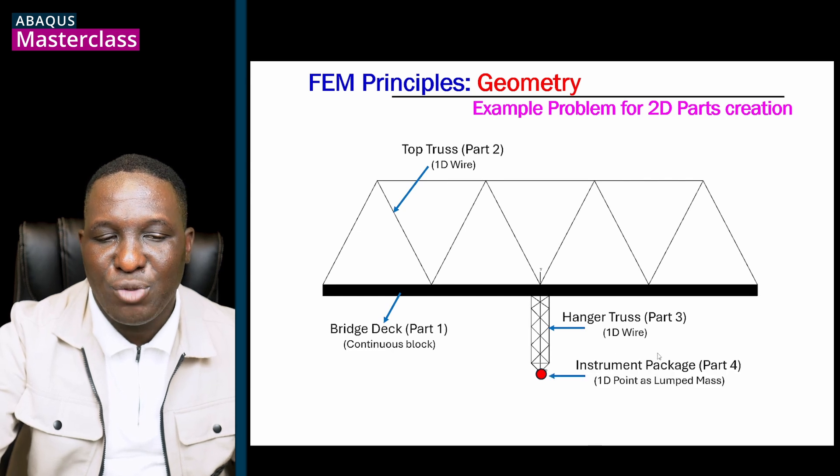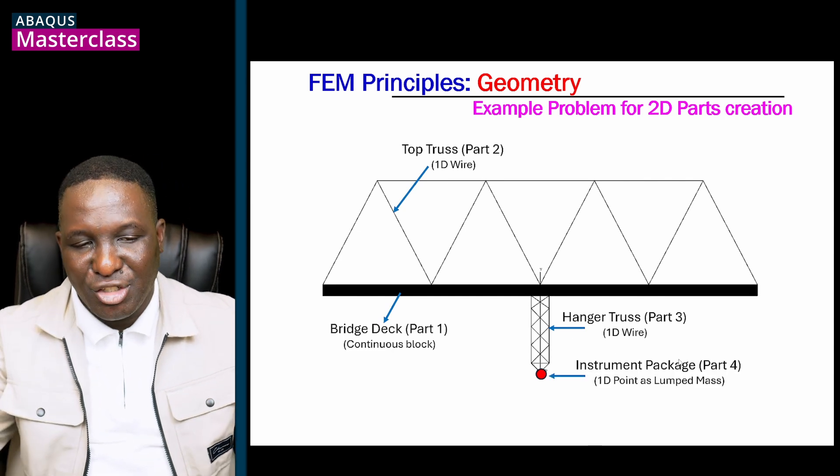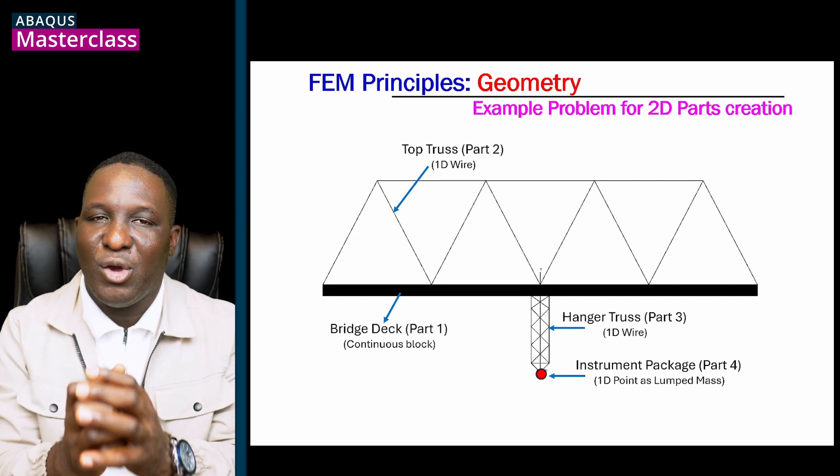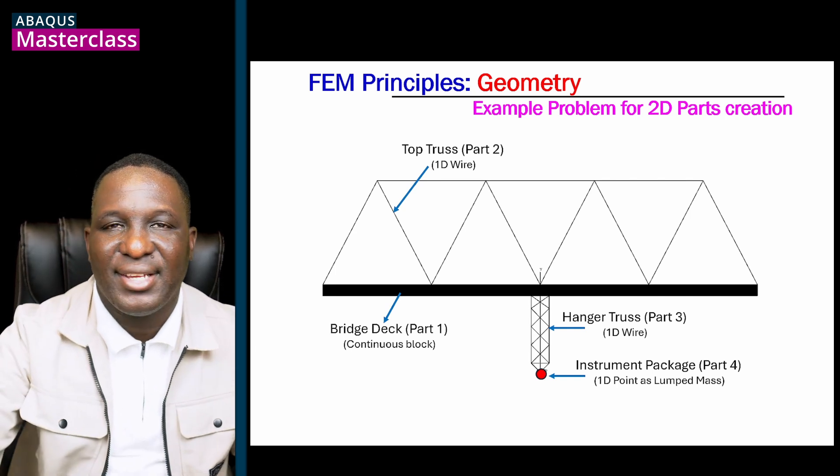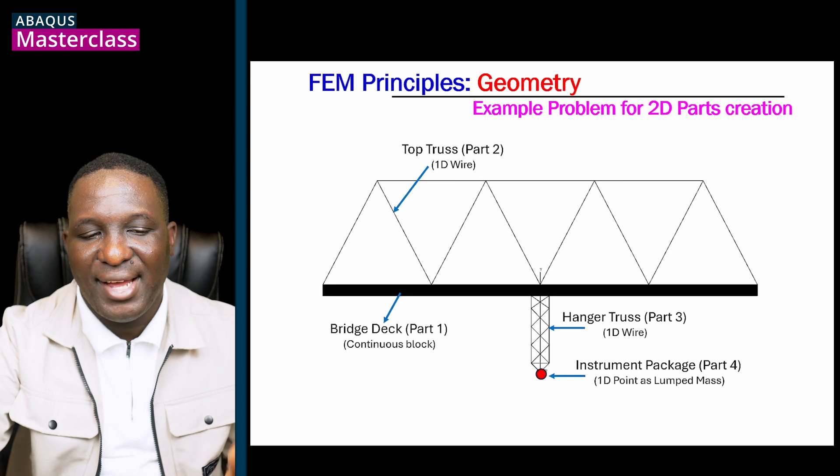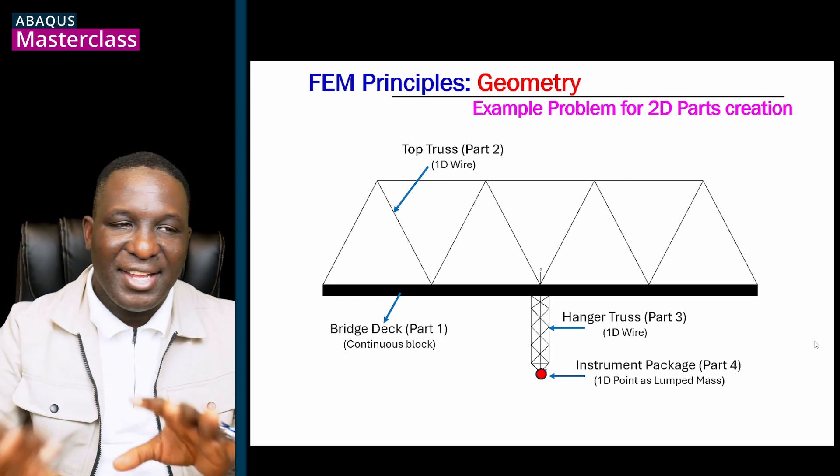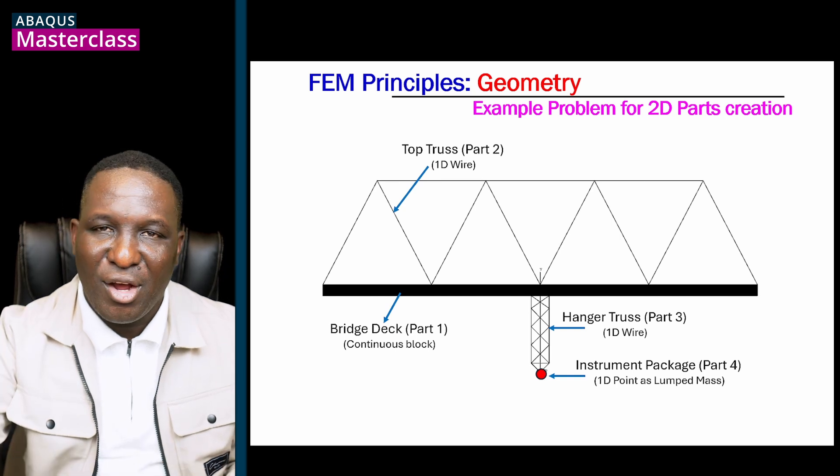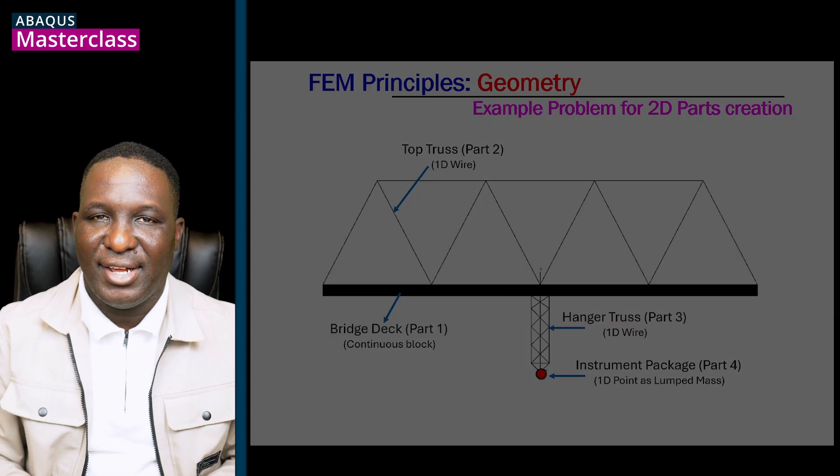And then finally, we've got the instrument package here, which got three-dimensionality to it. However, for the sake of this simulation in this virtual domain, we're going to lump the whole mass into a single point, and that becomes a 1D point as a lumped mass. So you can see that there are four different parts that we're going to incorporate into one single model. So we're now going to ABAQUS to see how the whole thing is well set up.